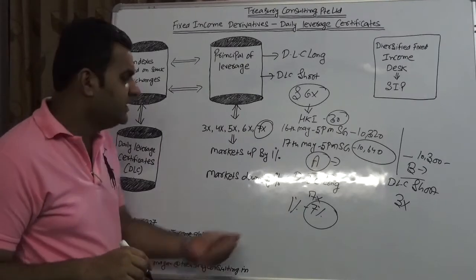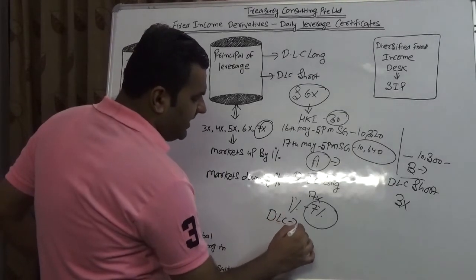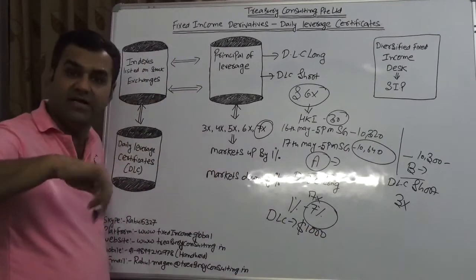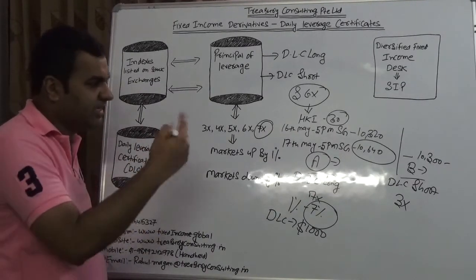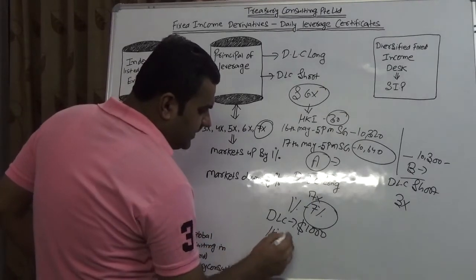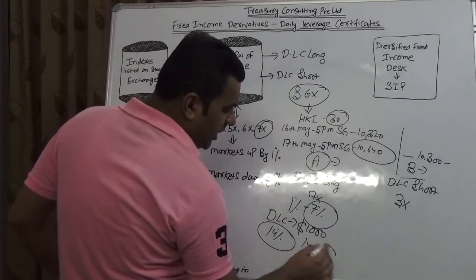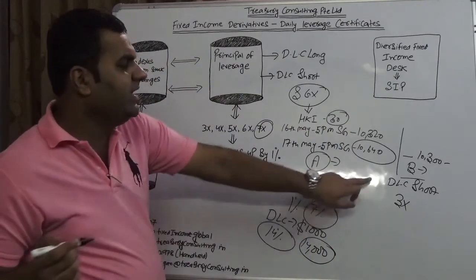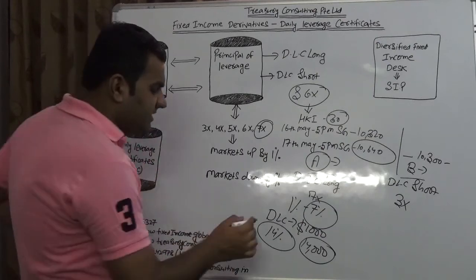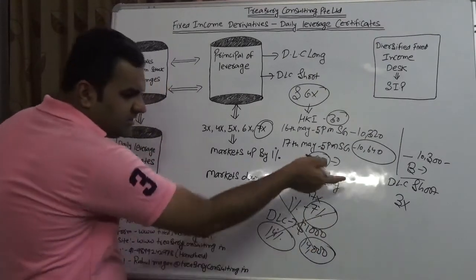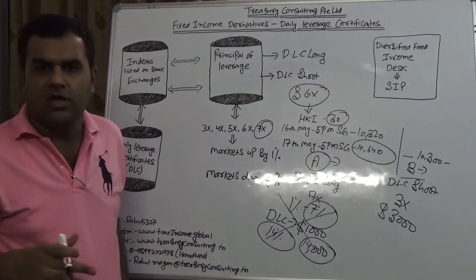It means if his bet turns true, when tomorrow the five companies open and show their results as he envisaged, the market actually went up. With every one percent up, he would be making seven percent. If he invested one DLC at one thousand dollars, and the index went two percent up, he would be making fourteen percent, which is $140. So he'd make $140 with an investment of only $1,000. On the contrary, if things don't work out, he would lose that, and this person would gain $30.